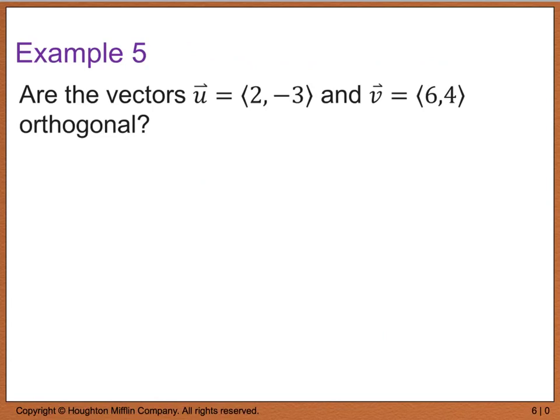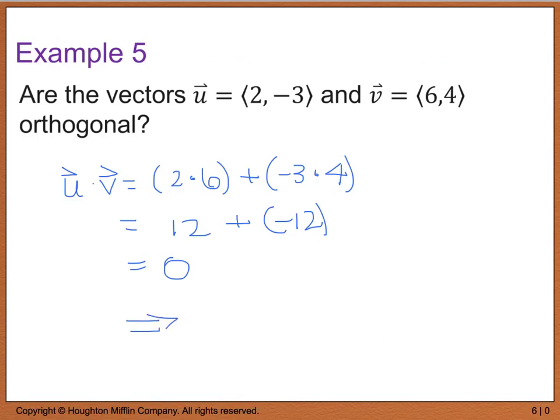So the first thing we're going to do is we are going to go u dot v, which is equal to 2 times 6, plus -3 times 4. When we go to simplify that, we have 12 plus -12, which equals zero. So because u dot v equals zero, this tells me that these two vectors are orthogonal.